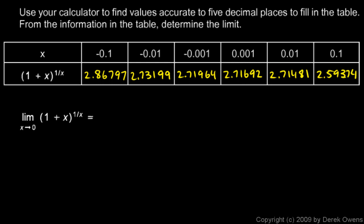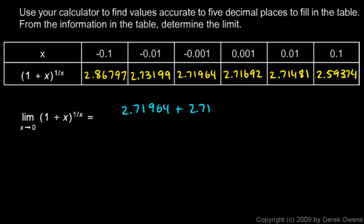Now let's look at those numbers — do they seem to be converging on something? From the left: 2.86, 2.73, 2.71. From the right: 2.59, 2.71, 2.71. They do seem to be converging on a value around 2.71. At zero, right in between, we can average the two closest values: 2.71964 plus 2.71692 over 2, which comes out to 2.71828.